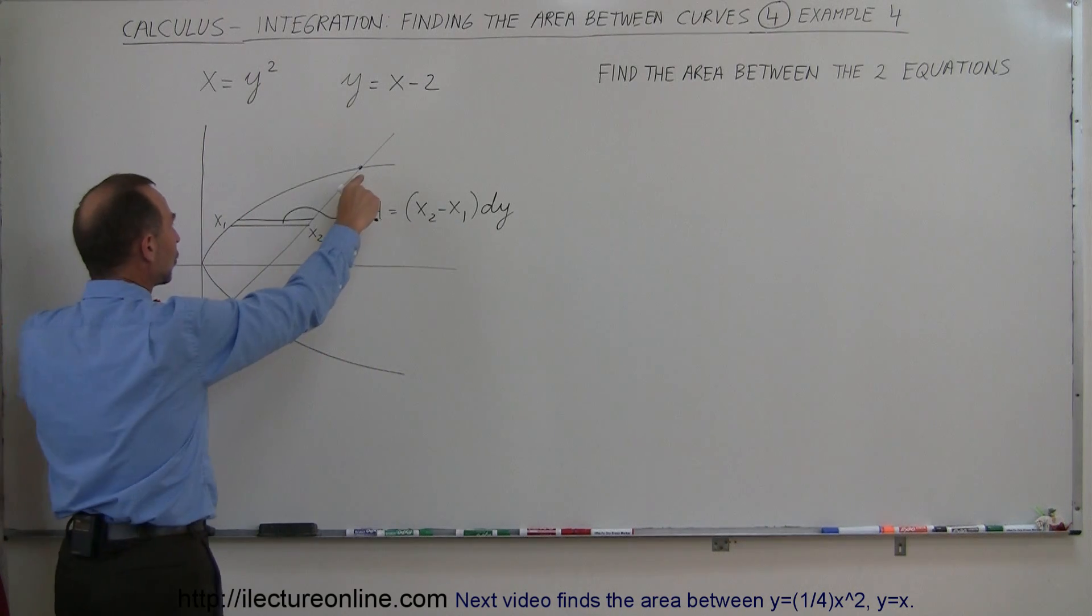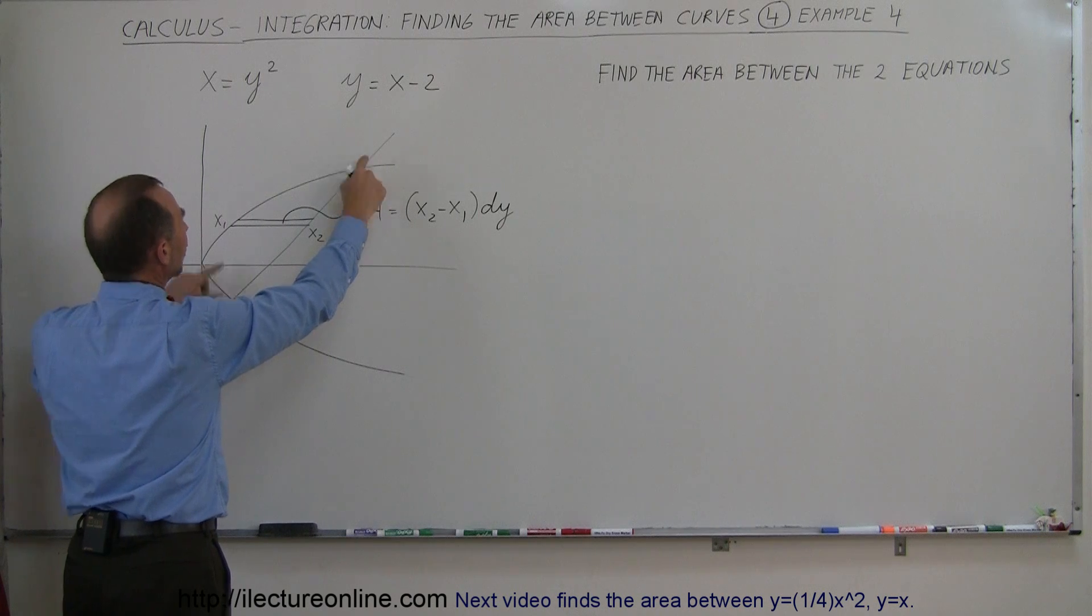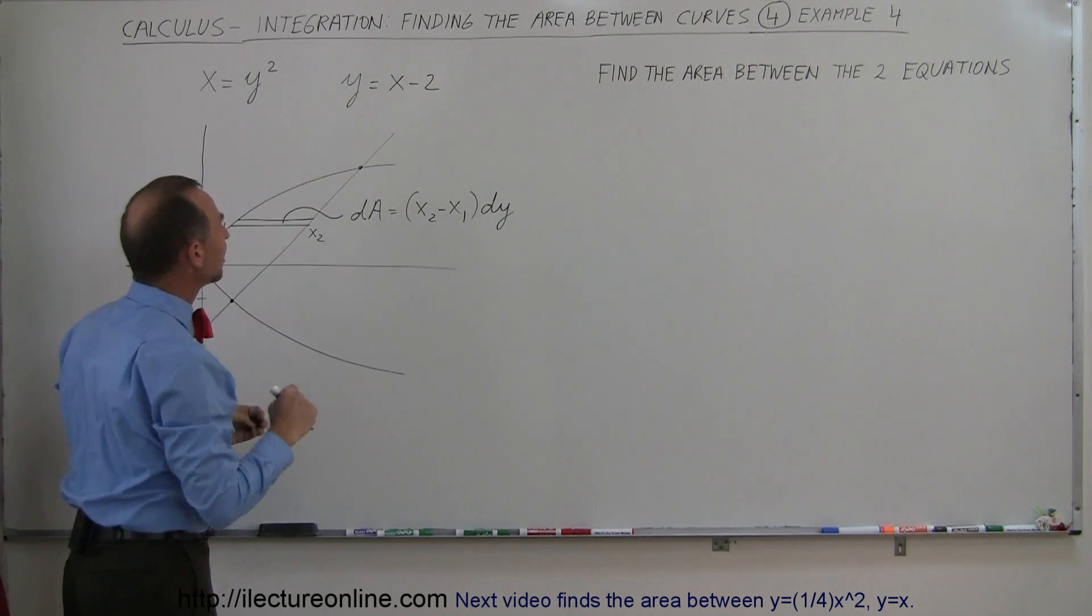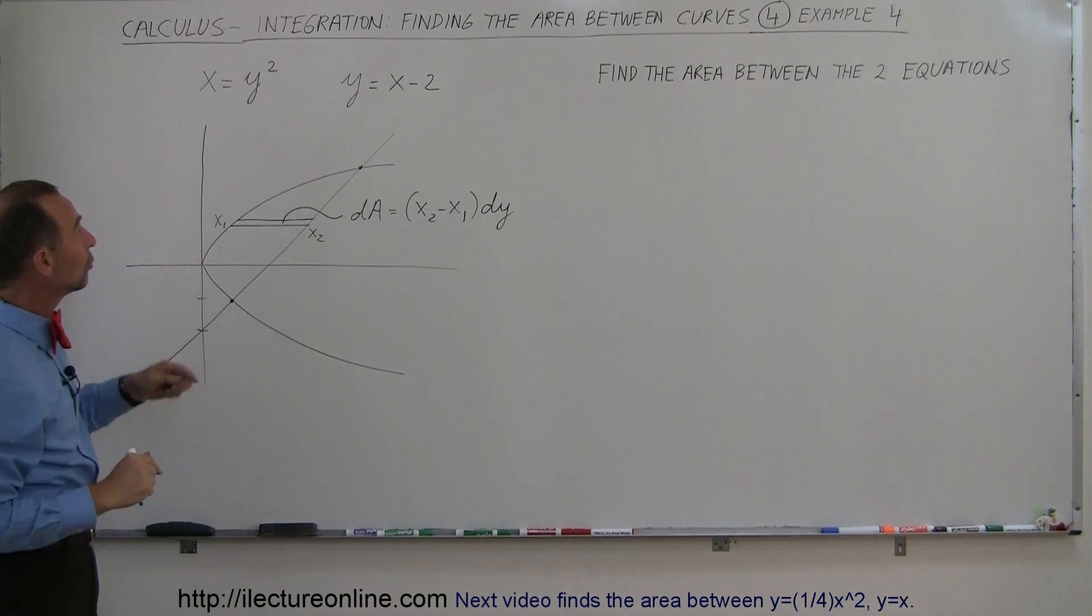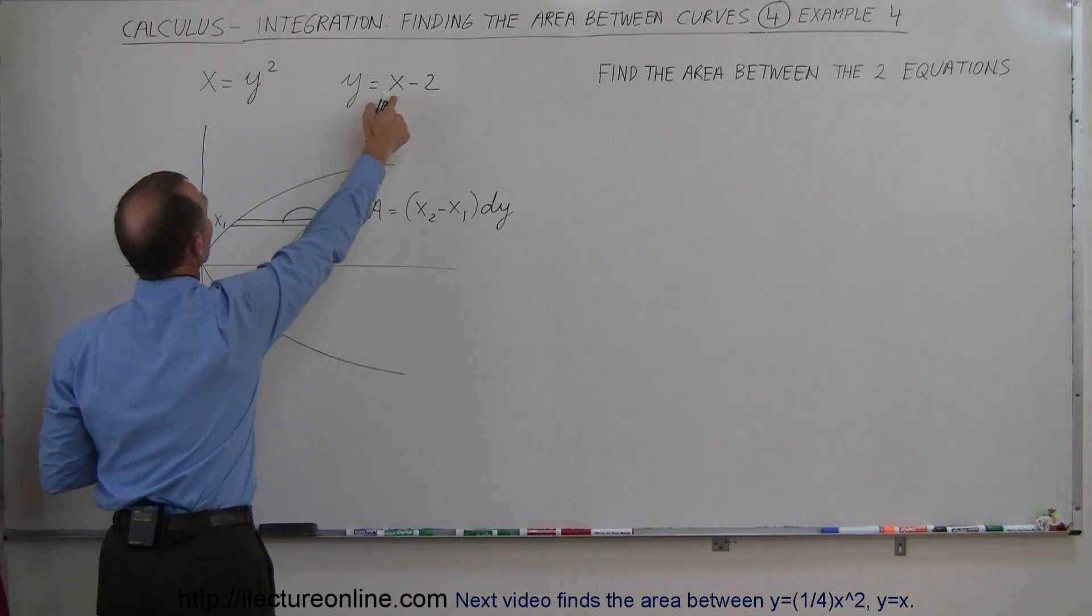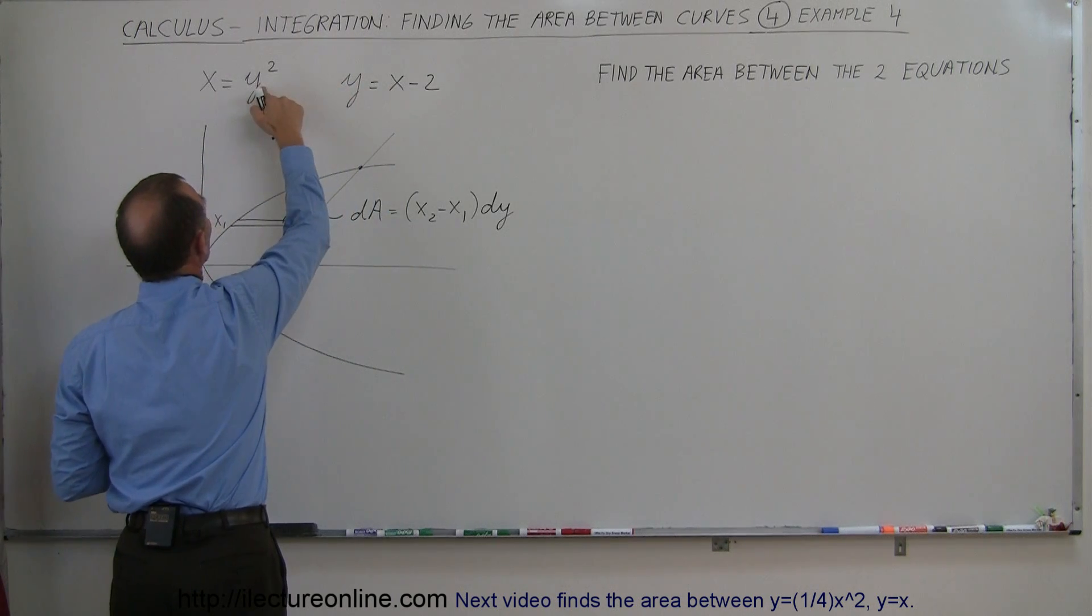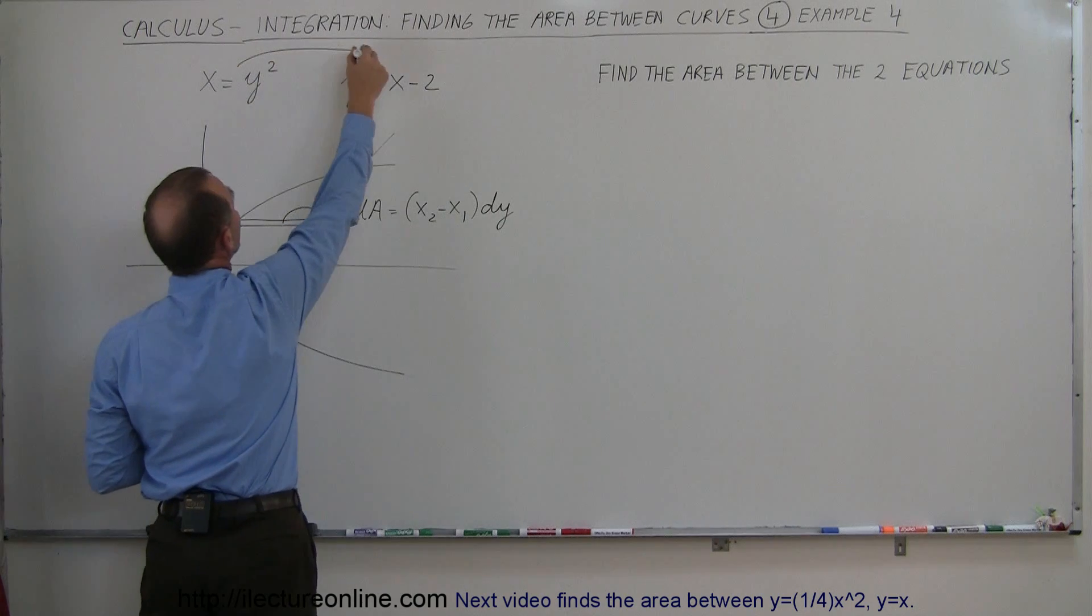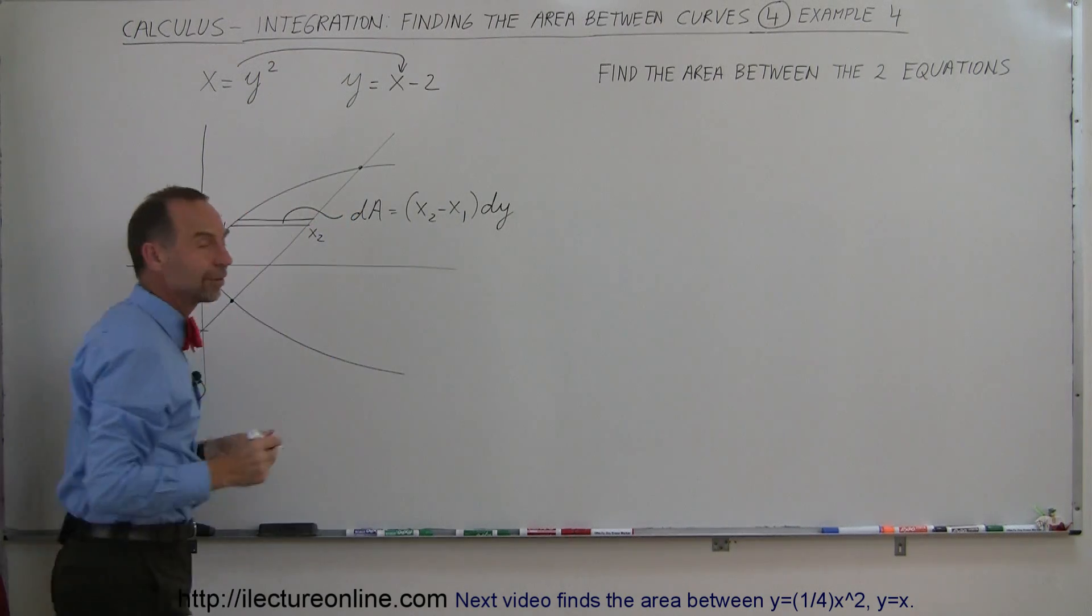Now let's also find out where the two lines cross right here, which means we have to solve these two equations simultaneously. So what we can do is we can say, okay, this x right here is equal to y squared from the other equation, and we plug that in here and solve it for y. So let's do that.